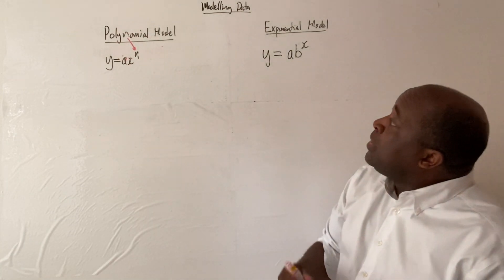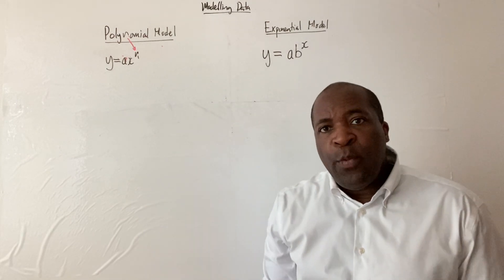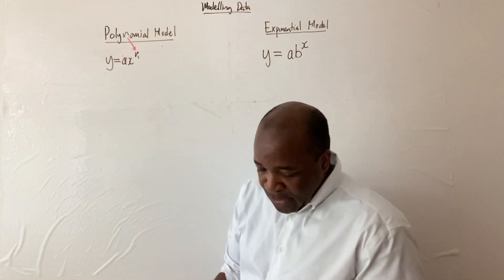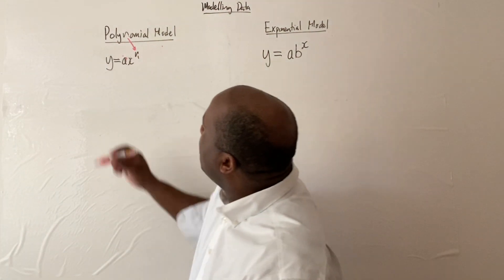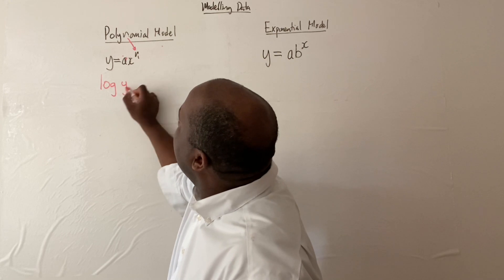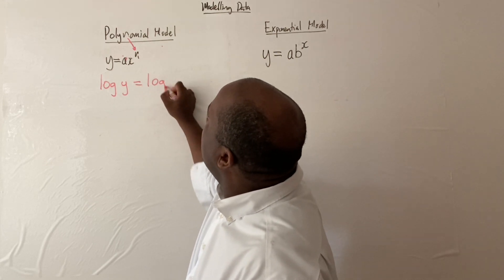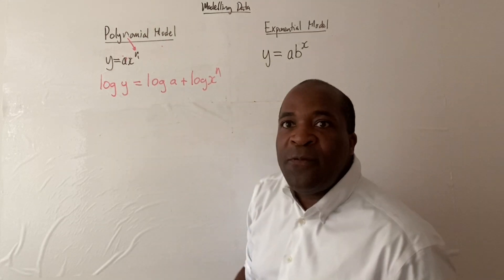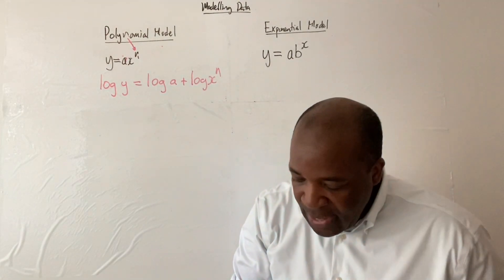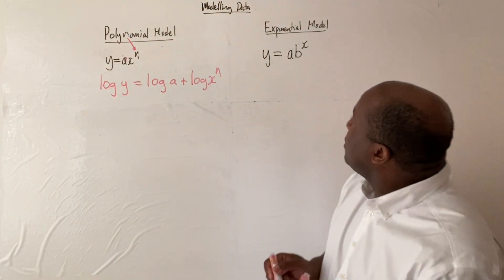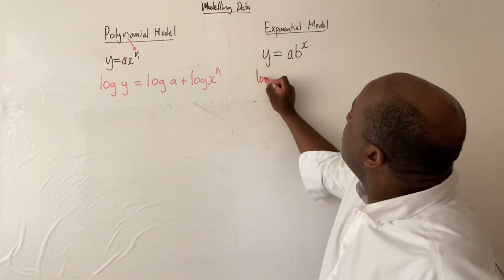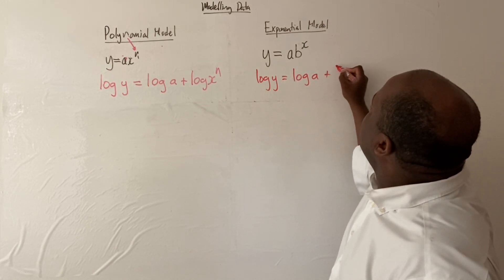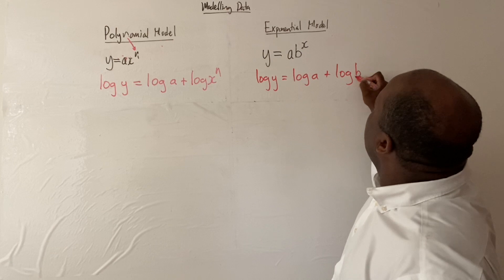We can rewrite this now in logarithmic form and we're going to apply the rules of logs that you have learned earlier. Applying the rules of log, we know that log y is equal to log a plus log x to the n. If you have a product, we know that we can separate by invoking the addition rule. Similarly, log y is equal to log a plus log b to the x.